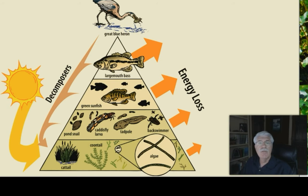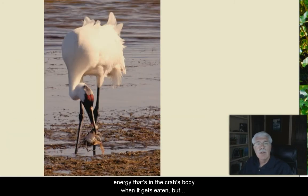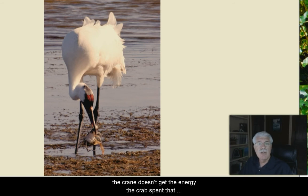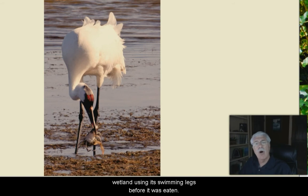An example of this energy loss happens when a whooping crane eats a blue crab. The crane gets any energy that's in the crab's body when it gets eaten, but the crane doesn't get the energy that the crab spent that day walking on the bottom and swimming around the wetland using its swimming legs before it was eaten. That energy is lost.